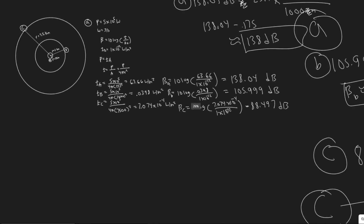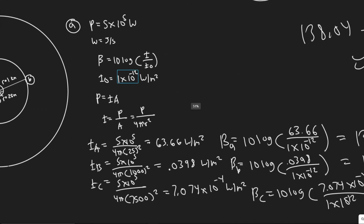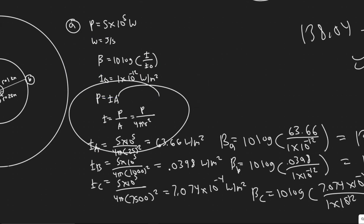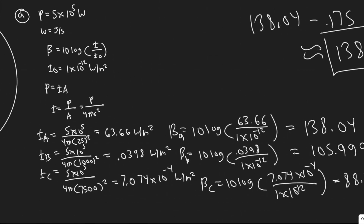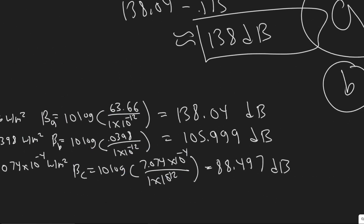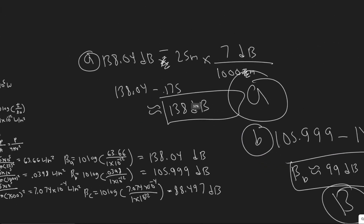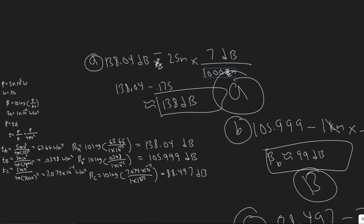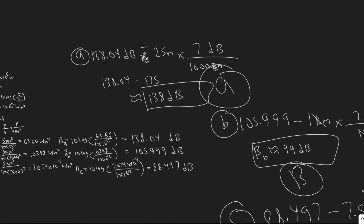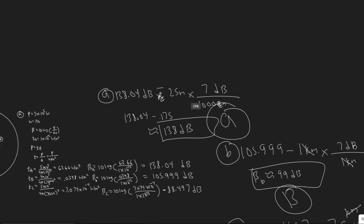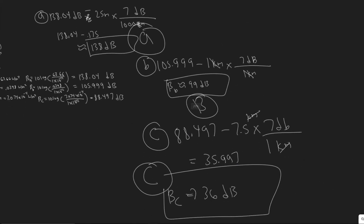Quick rundown: we needed the intensity to solve for the sound level, which we found using I = P/(4πr²), just changing the radius for each part. Then we plugged into the beta formula to get the sound level. We also had to subtract the air absorption loss — 7 decibels per kilometer — multiplied by the distance, and subtract it from each result.